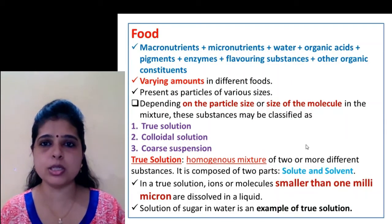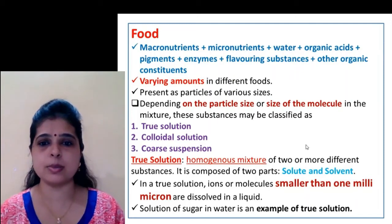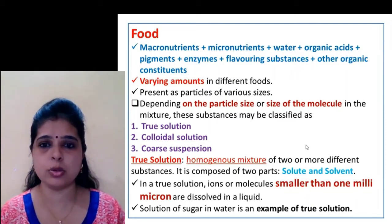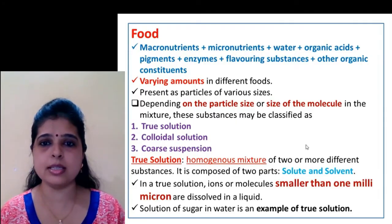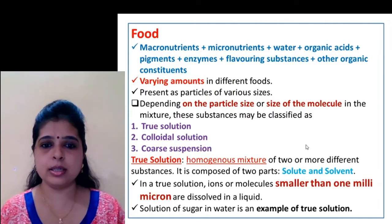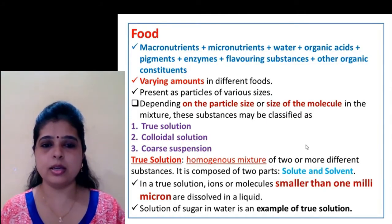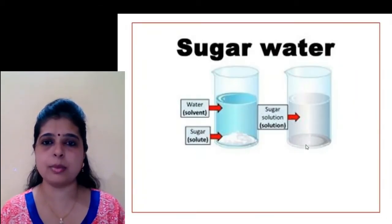First is true solution. True solution is a homogeneous mixture of two or more different substances. It is composed of two parts: first is solute and another is solvent. Solute is a substance that is generally present in a lower quantity and it is dissolved in the solvent, which is generally present in a larger quantity. In true solution, ions or molecules are generally smaller than 1 millimicron. The solution of sugar in water is an example of true solution.